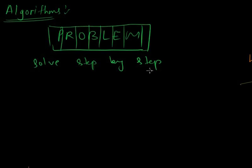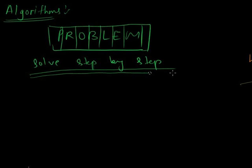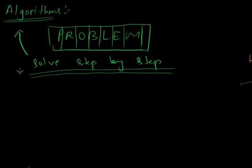Step by step solving is a proven method in real life and also in computer science. This step by step solution of a problem is nothing but an algorithm. An algorithm is nothing but a step by step solution for a problem. It is not a program — it is just a step by step solution of a problem.